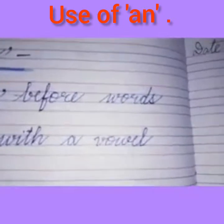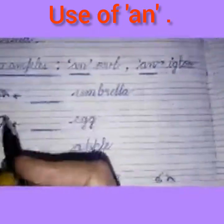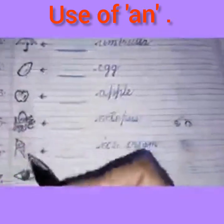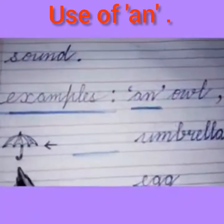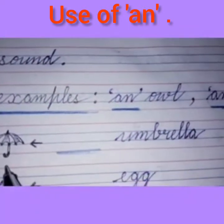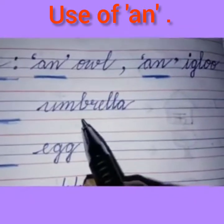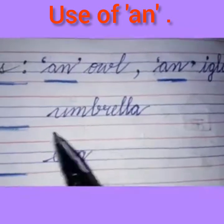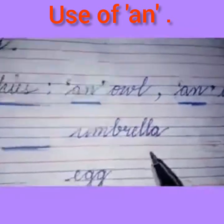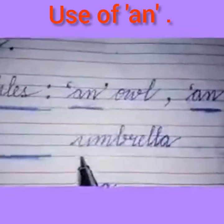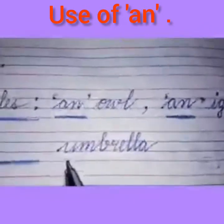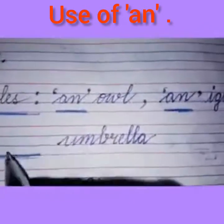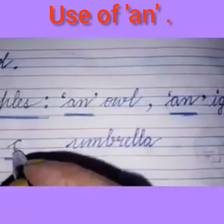I have drawn a few pictures here. Our first picture is of an umbrella — U-M-B-R-E-L-L-A, umbrella. Since umbrella starts with a vowel sound, we will write 'an' before it: an umbrella.